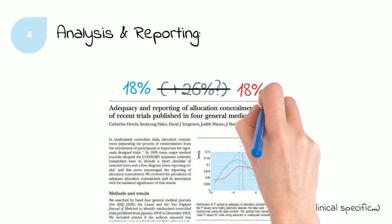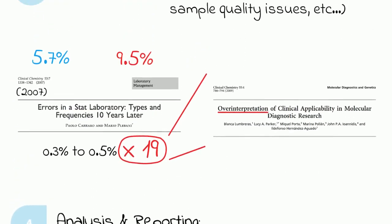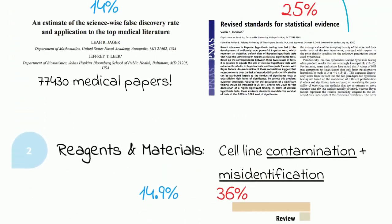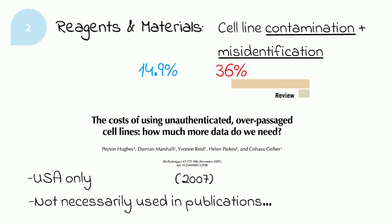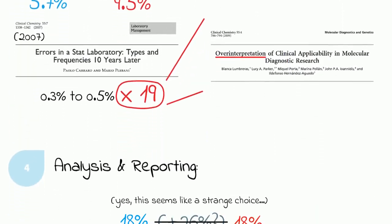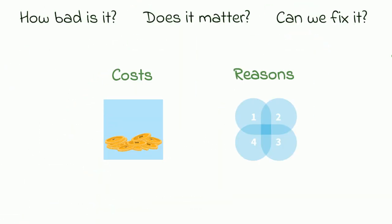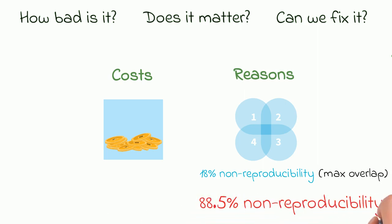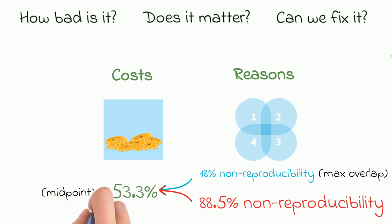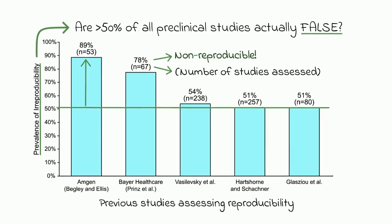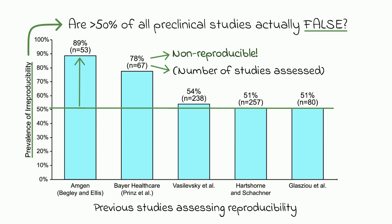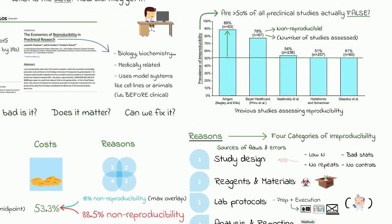So when you combine the error rates from the four different categories together, what is the overall rate of irreproducibility? The authors wanted to account for the very clear possibility of overlap between the categories, so they took the highest of the low estimates — 18% — and said that's the lowest it can be, even if all four categories completely overlap. For the highest possible irreproducibility rate, assuming absolute minimal overlap, they simply took the sum of all the high estimates: 88.5%. For a modest estimate, the midpoint between the two would be 53.3%. As you can see, the range matches well with the reported irreproducibility rates in the earlier studies, confirming the pervasiveness of irreproducibility in preclinical research using a very different approach. The percentages given for each category in their final figure show how much each category contributed to the overall rate of non-reproducibility.